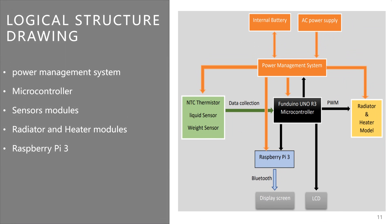The microcontroller retrieves information from the sensors and power management system, then analyzes and processes it through programming. If the temperature is not within the set range, an instruction is given to the radiator or heater module. Another instruction is also given to the power management system to supply the heater and radiator. Real-time output information is then sent to the device LCD as well as the wireless monitoring display screen.